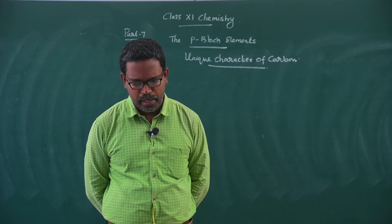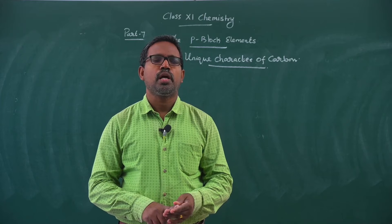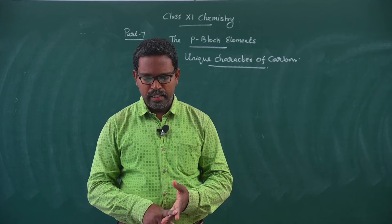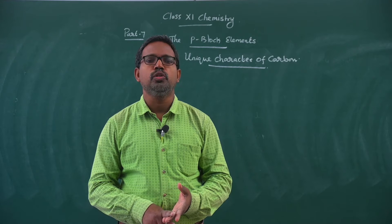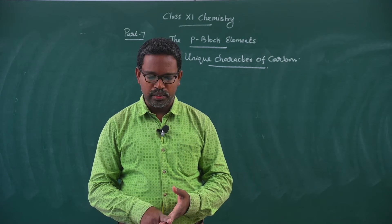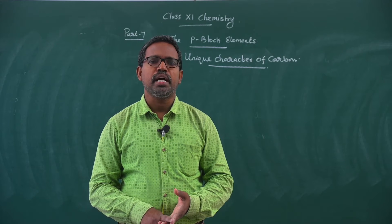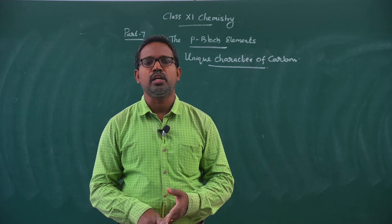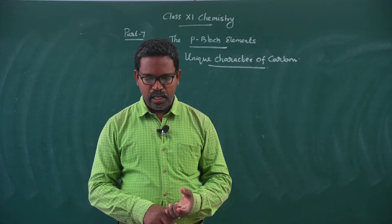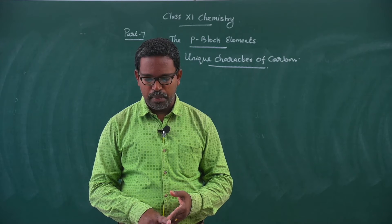The bond enthalpies of the elements of group number 14 are as follows: C-C single bond is 348 kJ/mol, Si-Si single bond is 297 kJ/mol, Ge-Ge single bond is 260 kJ/mol, and Sn-Sn single bond is 240 kJ/mol.